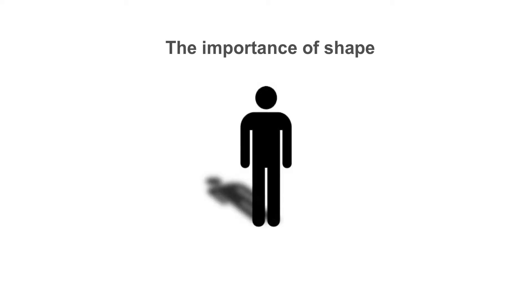When a light beam shines on an object, the object will cast a shadow. By understanding the shape of the object and the direction of the light beam, we can predict the shape of the shadow. There are analogies to this also in the X-ray world.